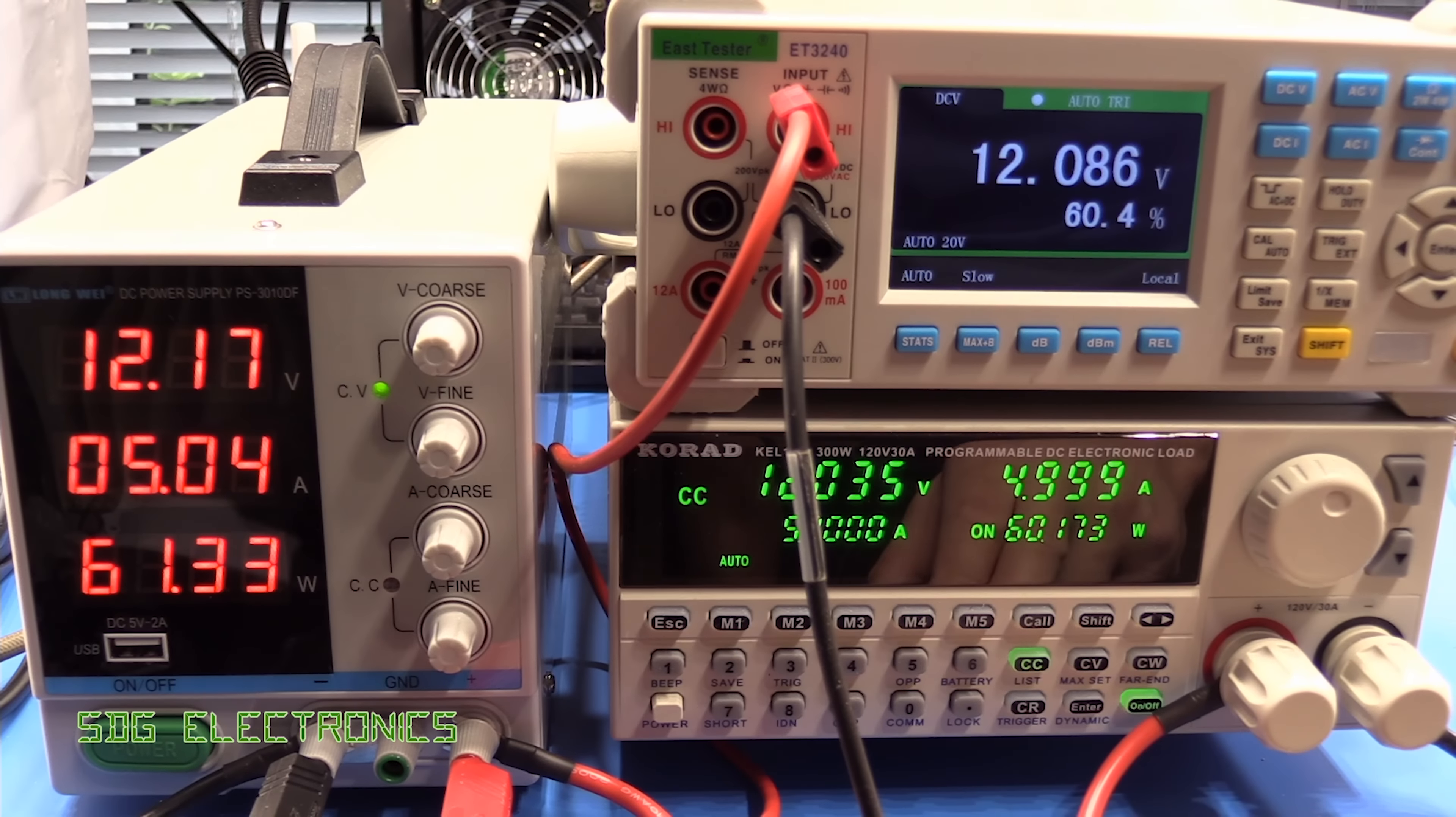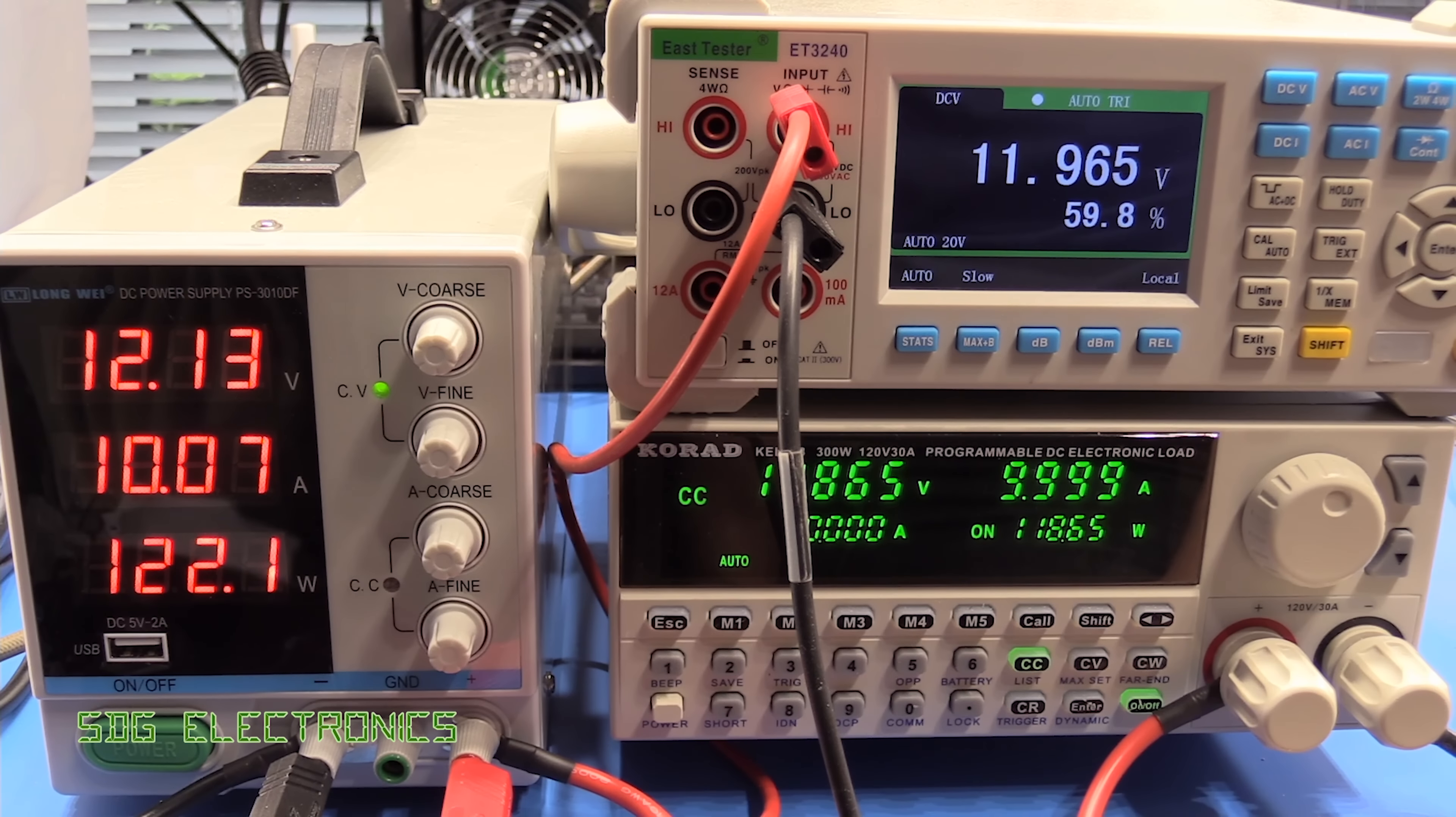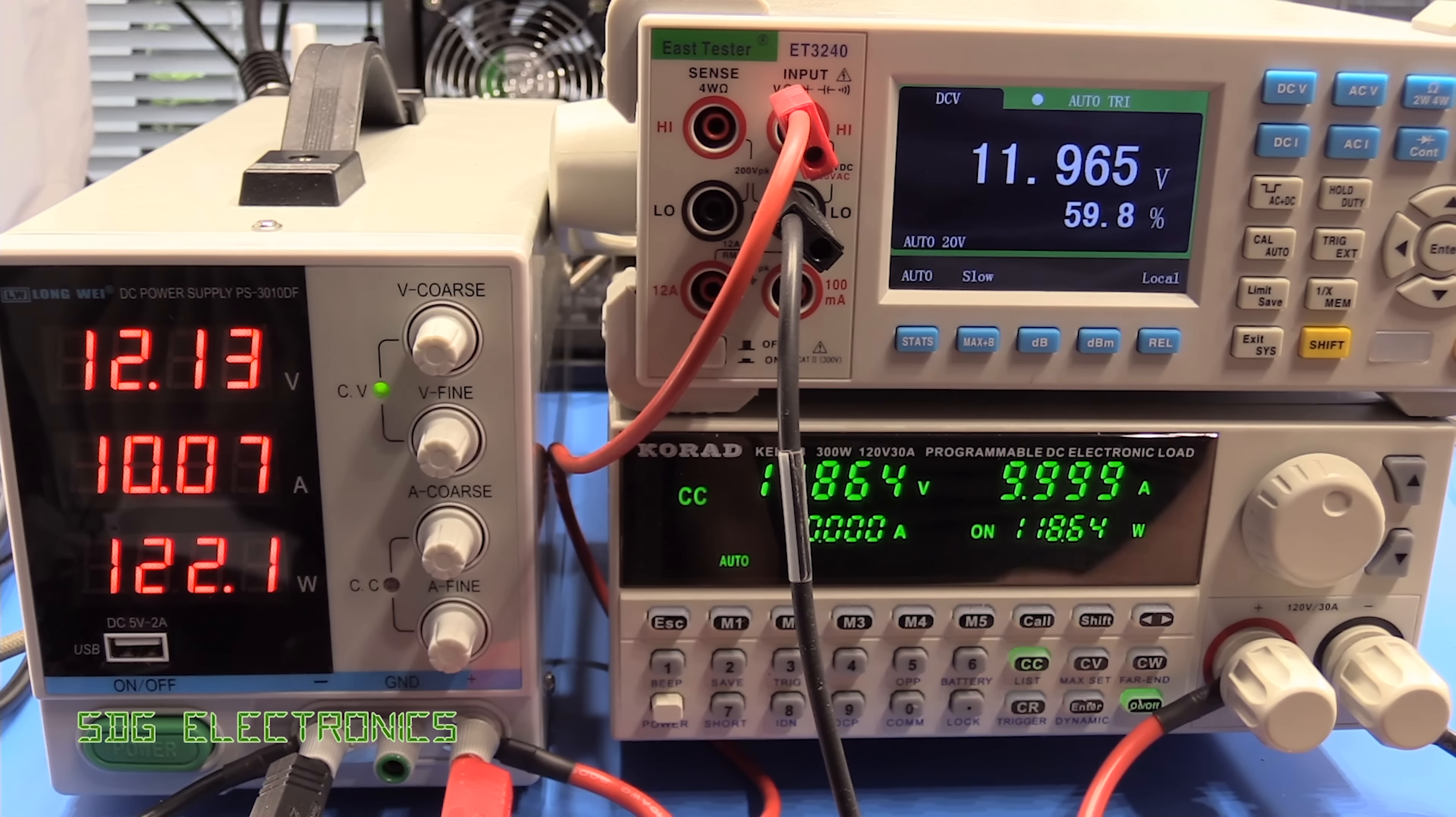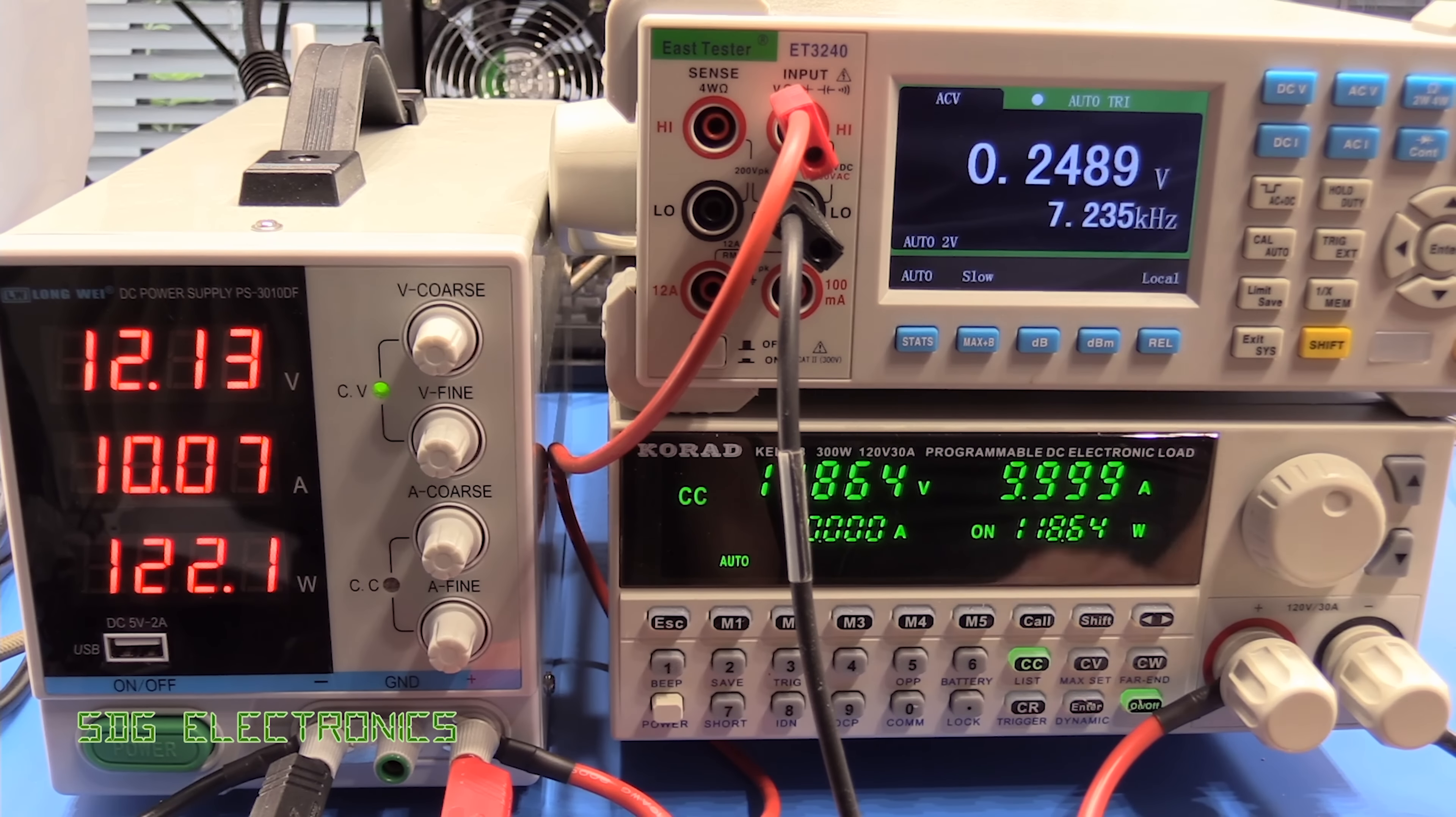And we'll try setting the current to the full 10 amps. So let's see what happens. Okay, so a bit of voltage drop in the cable again, but not too bad. It is happily providing that 10 amps. Let's see if we can look what the ripple is. So the AC voltage component on here looks like it's settling at about 250 millivolts ripple at full load.